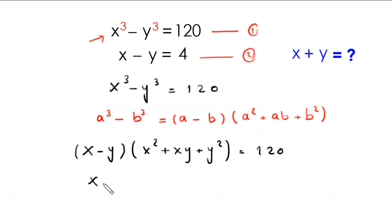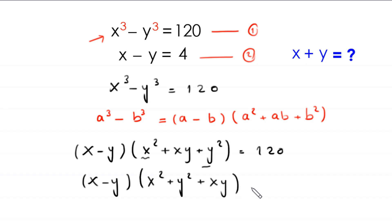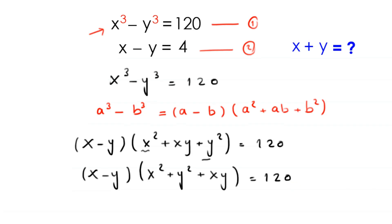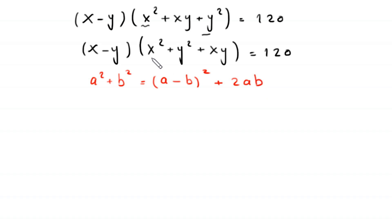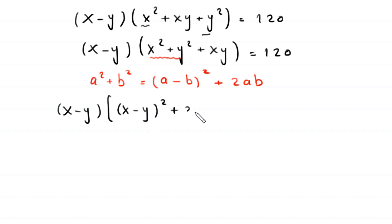Next, x minus y times — combining x squared and y squared — gives x squared plus y squared plus xy is equal to 120. Now by using the algebraic identity a squared plus b squared equals a minus b whole squared plus 2ab, this x squared plus y squared becomes x minus y whole squared plus 2xy.